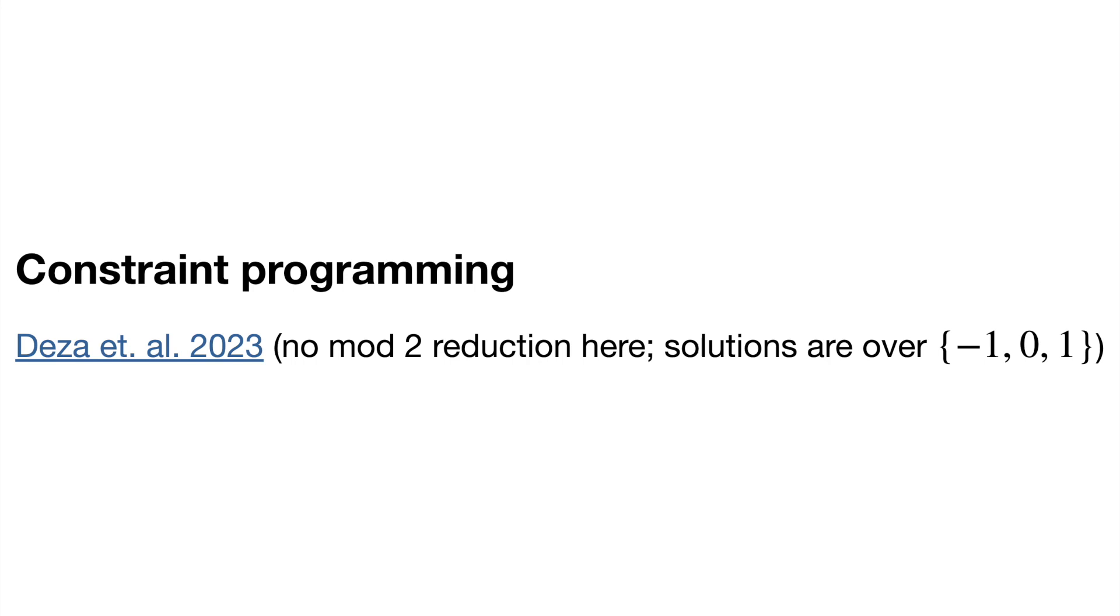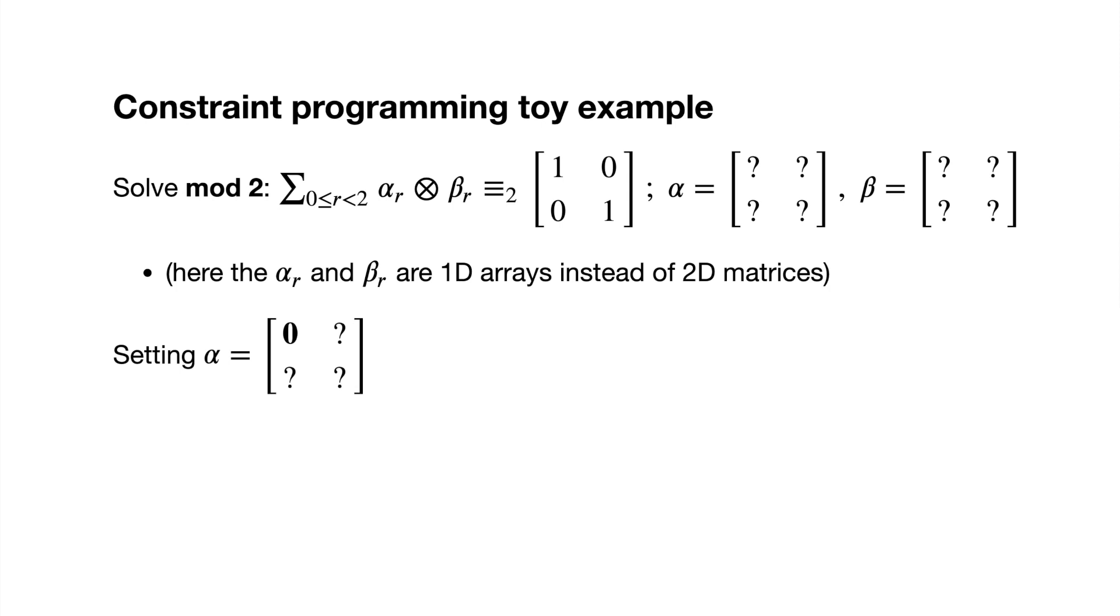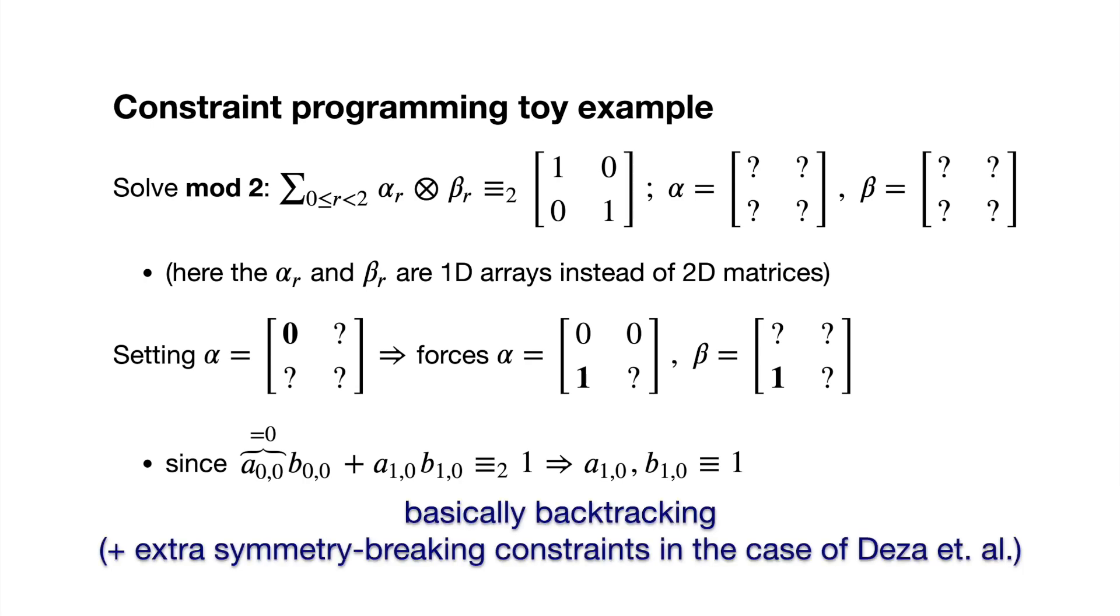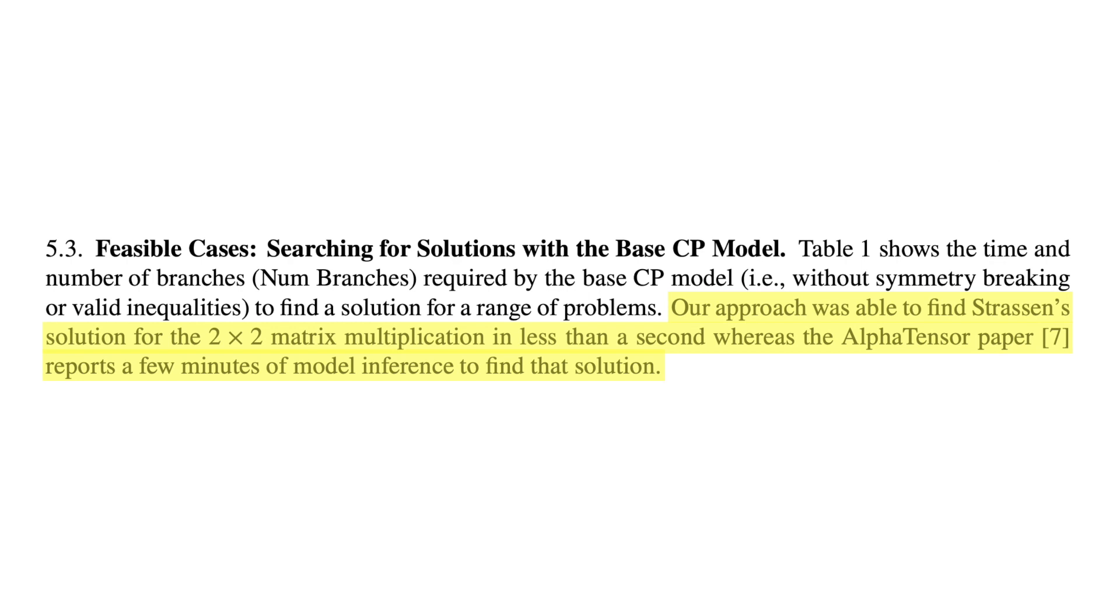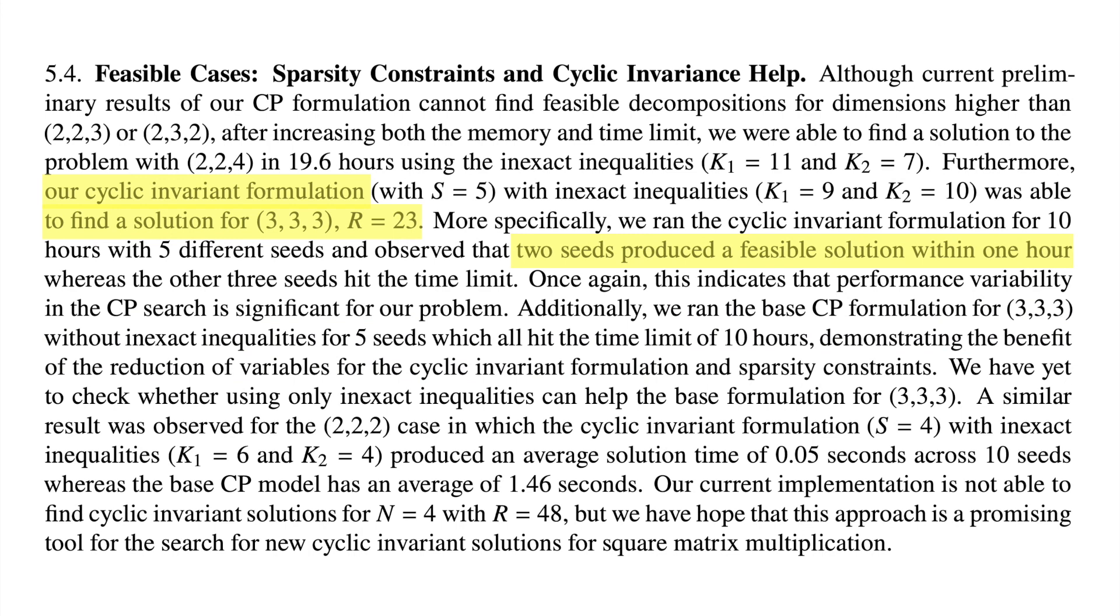Very recently, Deza et al has used a completely different, but in some ways simpler, approach: constraint programming. The idea is that you assign variables one at a time, and each time you assign a variable, that might rule out possible assignments of other variables. It's sort of like solving a Sudoku. Using constraint programming, Deza et al was able to find Strassen's algorithm in less than a second, compared to a few minutes for AlphaTensor. They also found a rank 23 decomposition of the 3×3×3 in about an hour, matching Lederman's record.